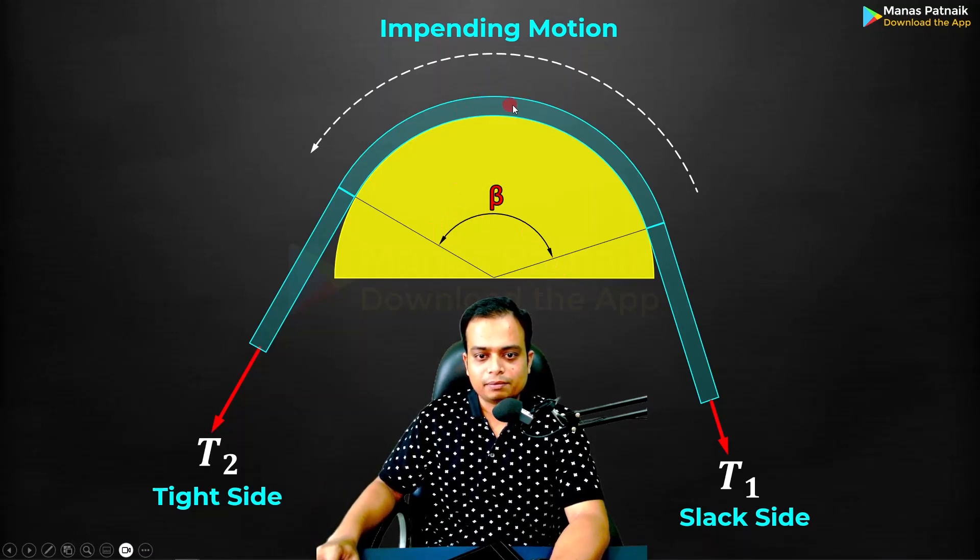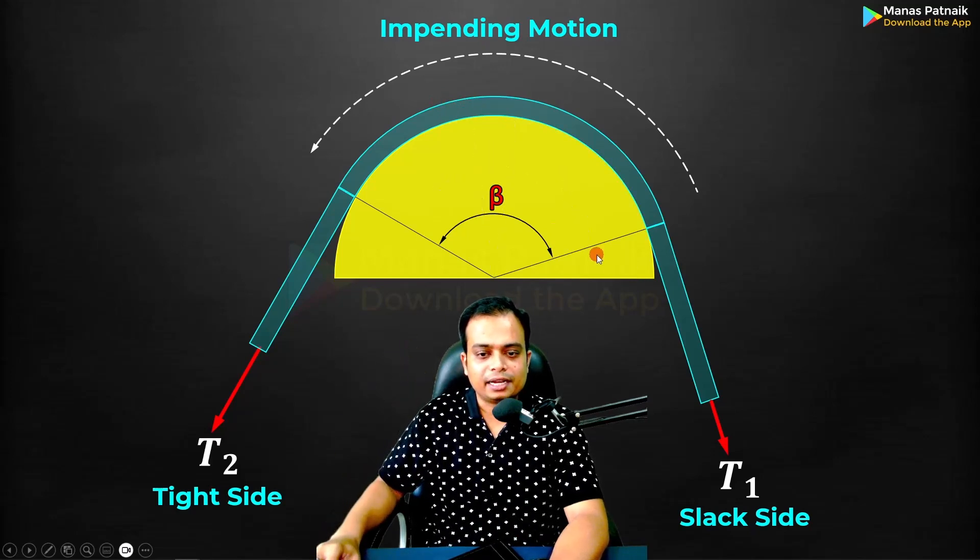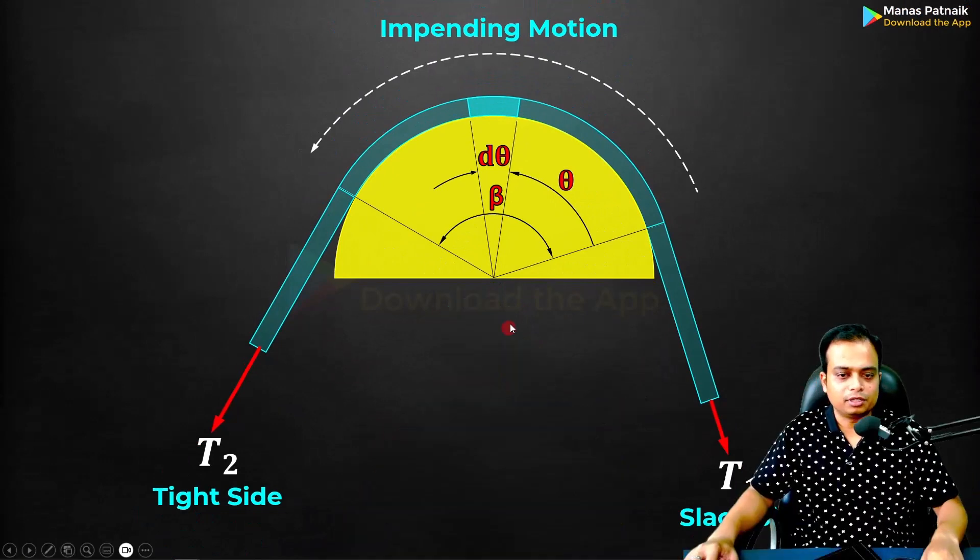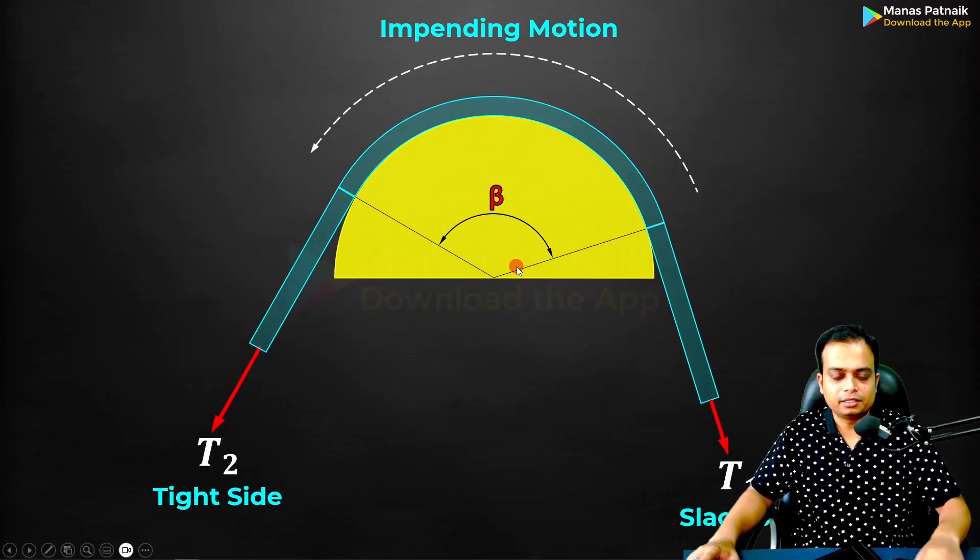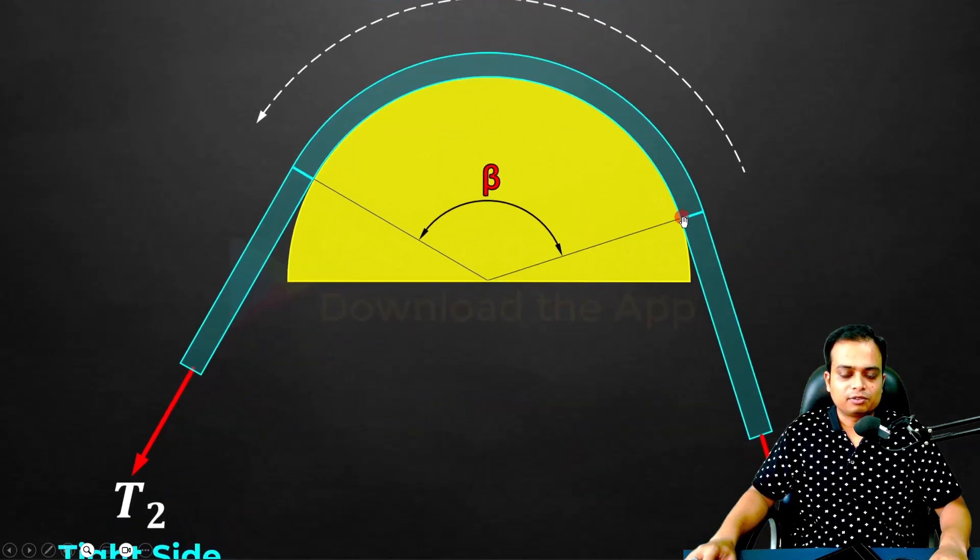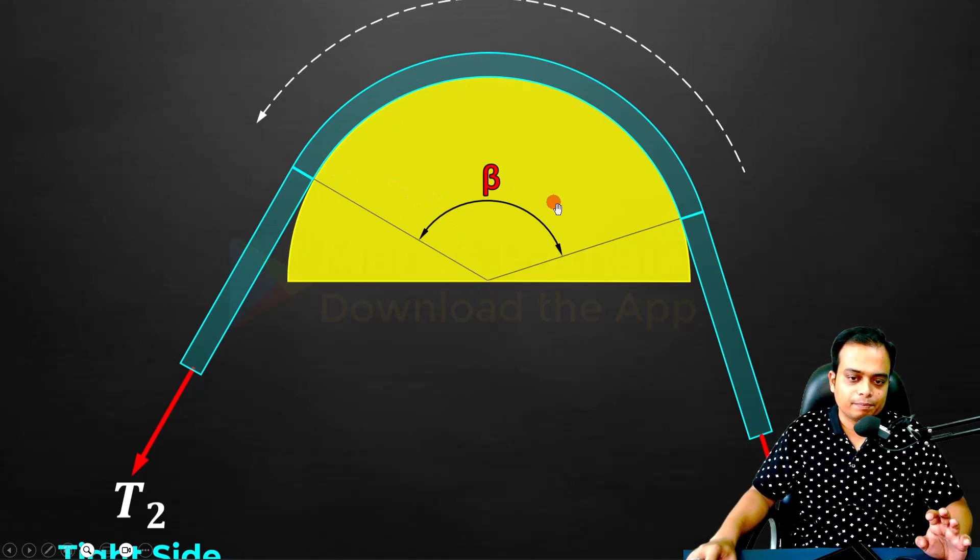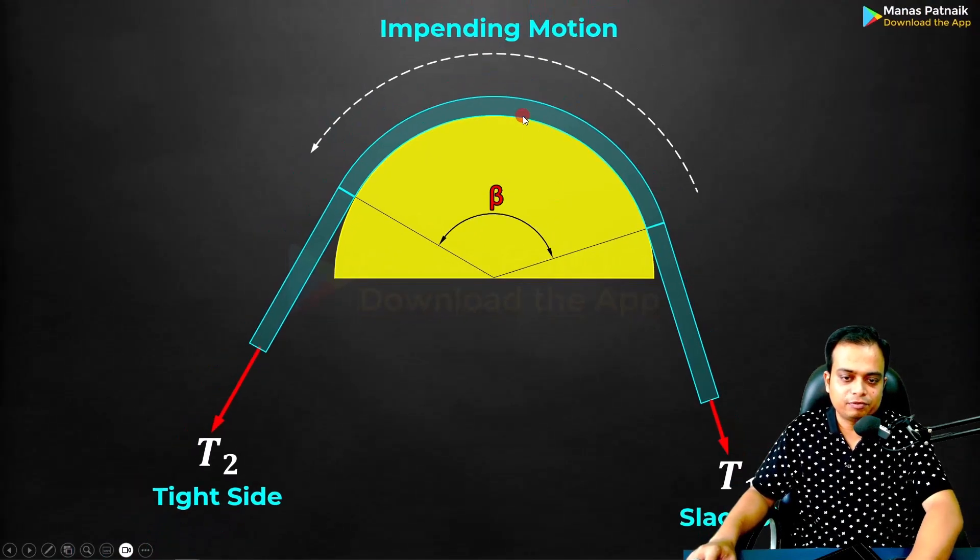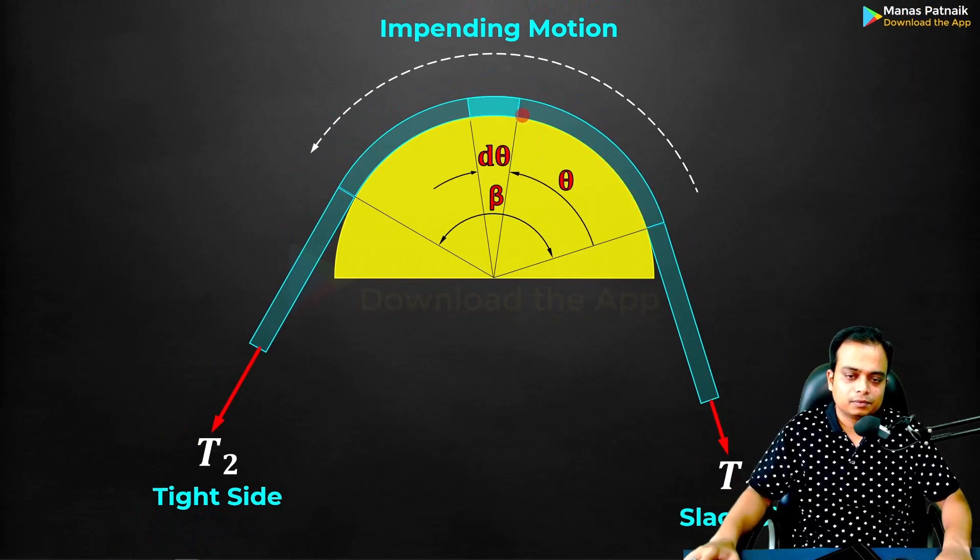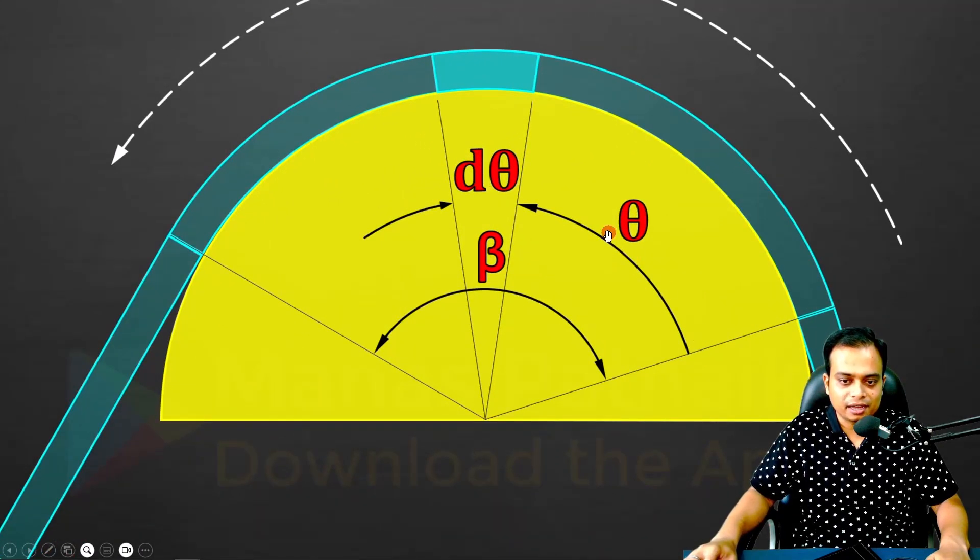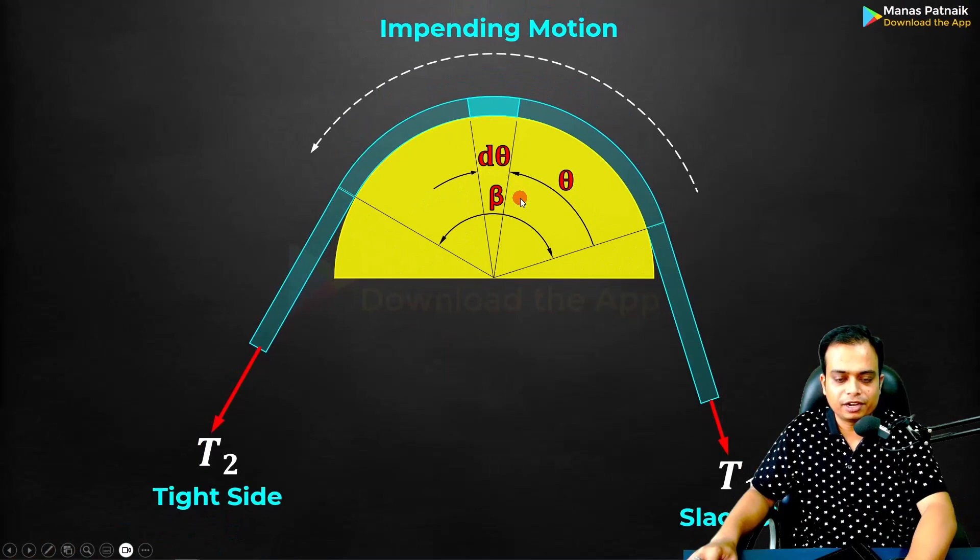Now this angle is beta, as I told you before. Let me consider a very small element—a small portion of the belt somewhere here at an angle theta. The small element is subtending an angle of dθ. Let me get back to my original position. The entire belt starts from this particular point and ends somewhere here. This is the angle of contact beta. If you consider a very small portion of the belt, it is going to subtend a very small angle which we call dθ. At an angle theta, the small element subtends dθ.